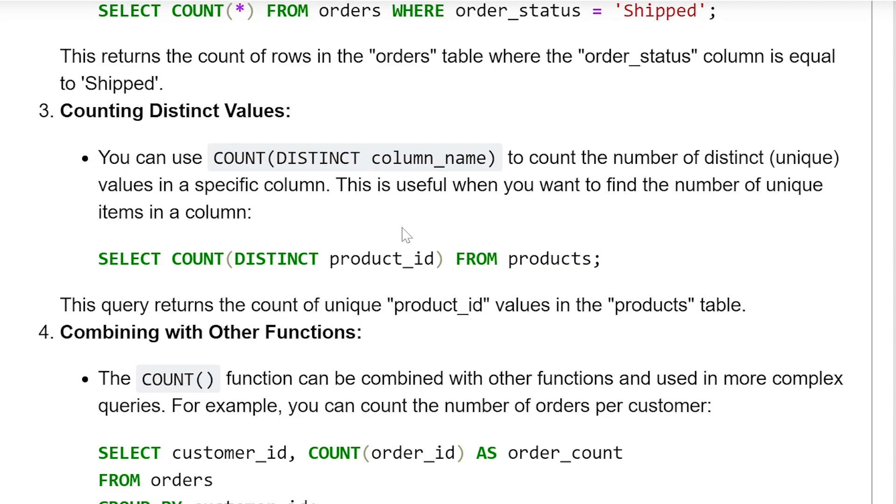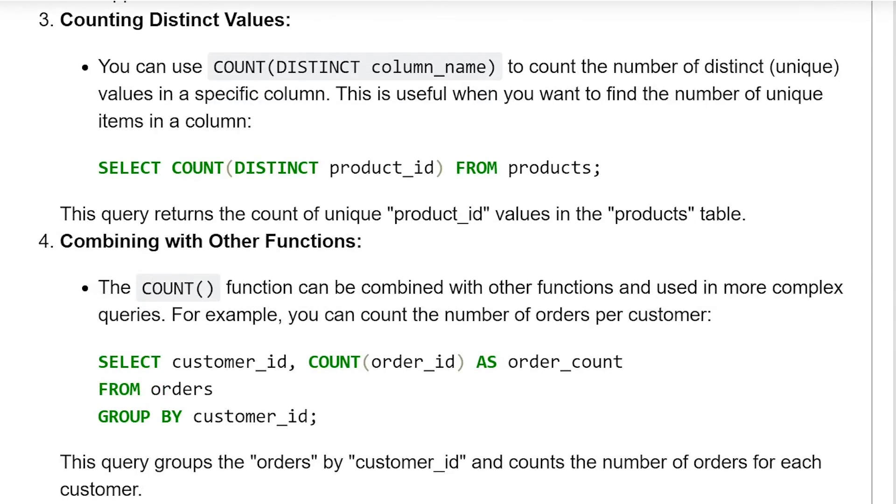Counting distinct values. You can use count distinct column name to count the number of distinct unique values in a specific column. This is useful when you want to find the number of unique items in a column. Select count distinct product ID from products. This query returns the count of unique product ID values in the products table.